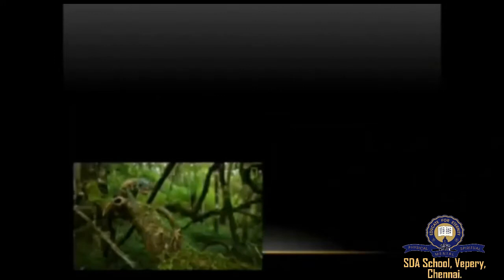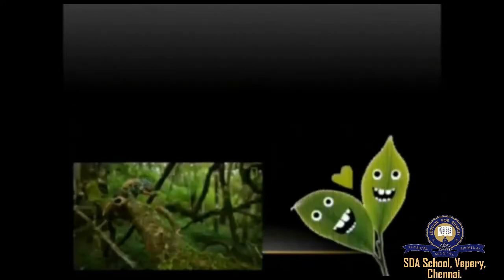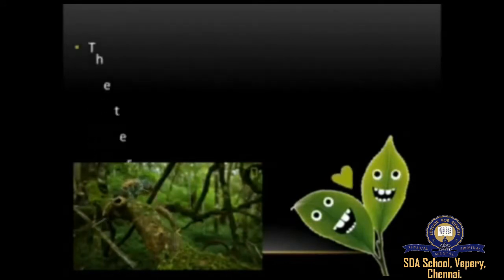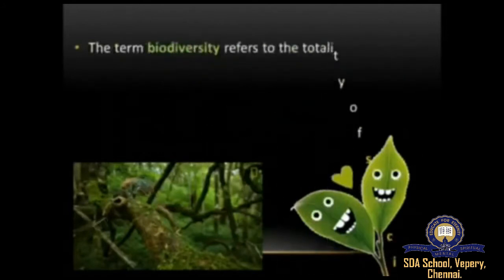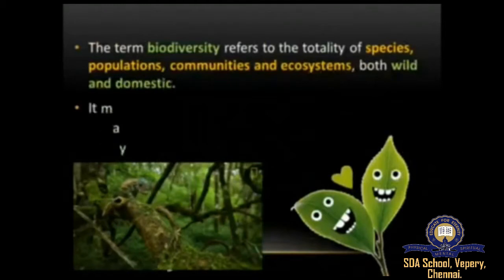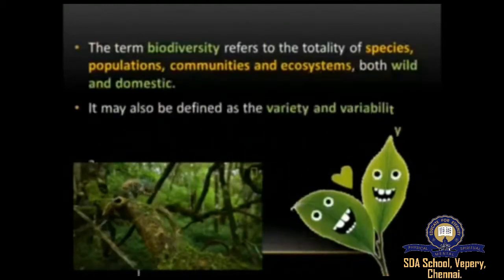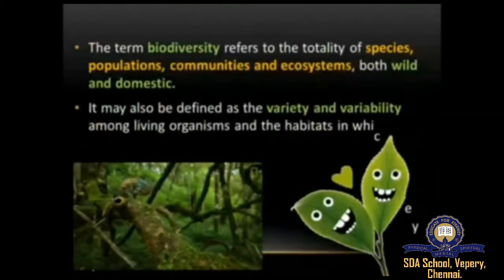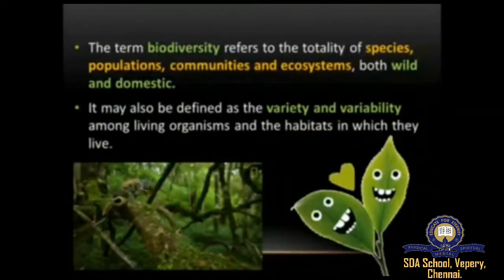In the living world, a lot of diversity is seen both in animals and plants — every plant and animal is unique. The term biodiversity refers to the totality of species, populations, communities, and ecosystems. It includes both wild and domestic. Biodiversity may also be defined as the variety and variability of living organisms and the habitats in which they live.